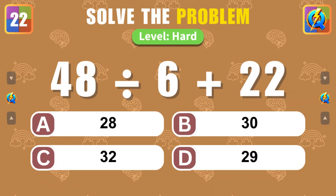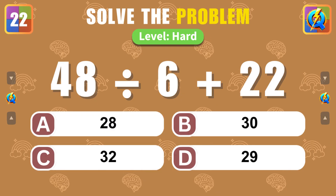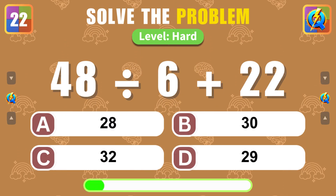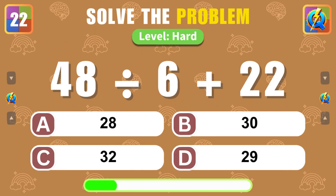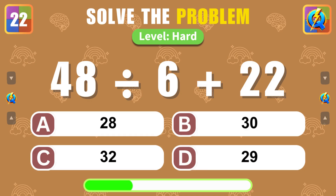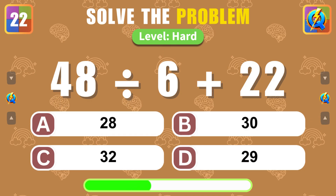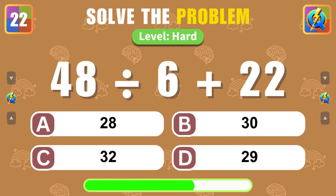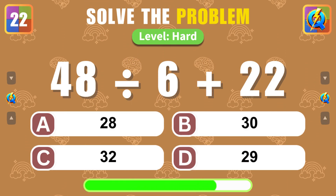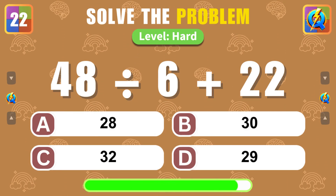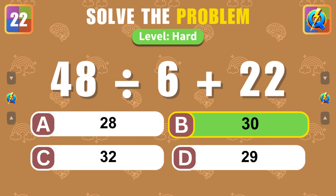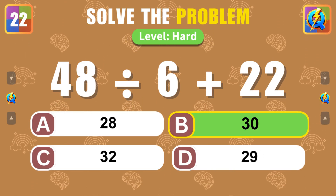What is the result of 48 divided by 6 plus 22? Well done, the answer is 30.